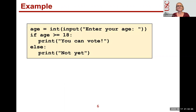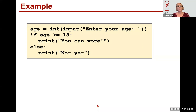Let's see some actual code examples. Here we get the age from the user with `input('Enter your age')`. The input function always returns a string, so we need to convert it to an int. Then we check: `if age >= 18:` we print 'You can vote'; `else:` we print 'Not yet'.